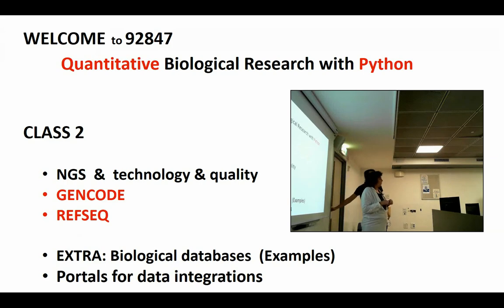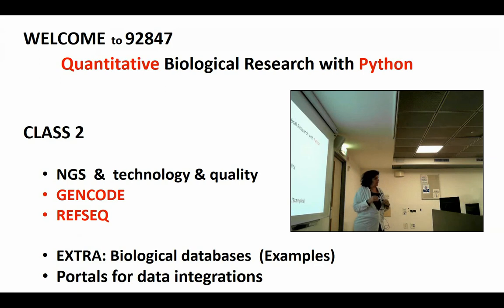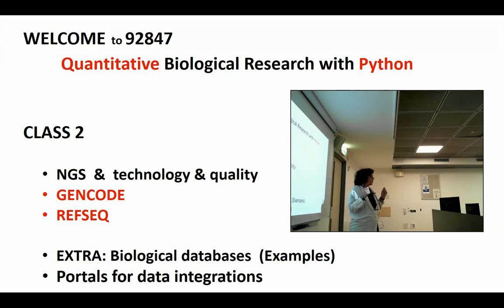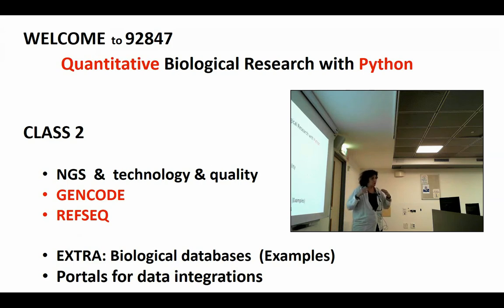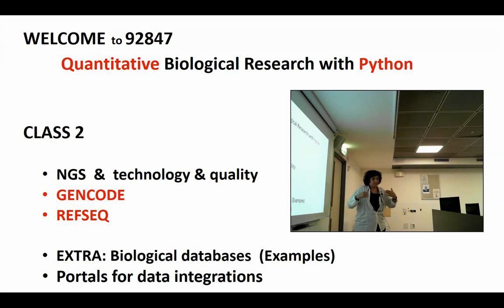Today we're going to cover mainly two topics, but we'll start with something I felt we didn't cover well enough last talk. We'll start with NGS technology and quality, just to share a few ideas that I think are sometimes overlooked but are critical. Then we'll talk about GENCODE and RefSeq, and we'll do some illustrations.